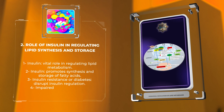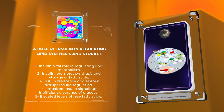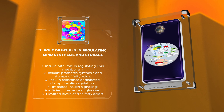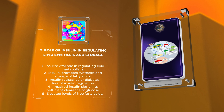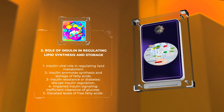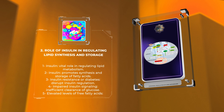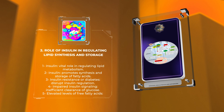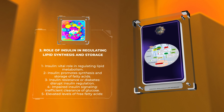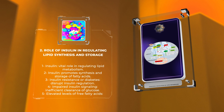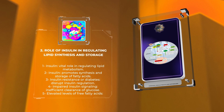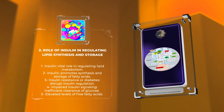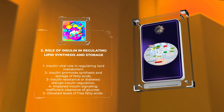Let's discuss the vital role of insulin in regulating lipid metabolism. Insulin, produced by the pancreas, acts as a key hormone in controlling glucose and lipid homeostasis. Upon a rise in blood glucose levels, insulin is released, signaling the cells to take up glucose for energy production. Insulin also plays a crucial role in lipid synthesis and storage. It promotes the synthesis of fatty acids within the liver, muscle, and adipose tissues. These synthesized fatty acids are then stored as triglycerides in adipose tissue, providing an energy reserve for future use. However, in conditions of insulin resistance or diabetes, this regulation gets disrupted. The impaired insulin signaling leads to inefficient clearance of glucose and increased lipolysis, resulting in elevated levels of free fatty acids in the blood. These excessive fatty acids can further contribute to insulin resistance and the development of metabolic disorders.